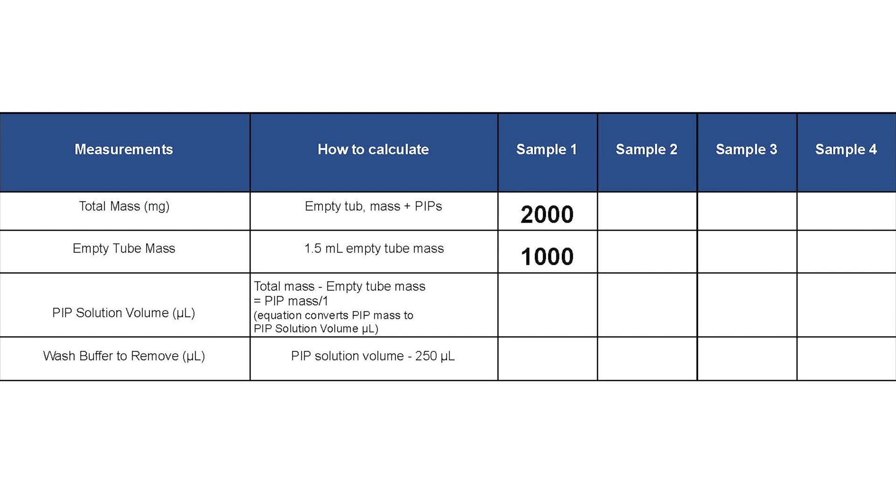Then, subtract empty tube mass from total mass to find the pip solution volume in milligrams, and convert milligrams to microliters on the assumption that 1 mg equals 1 microliter.